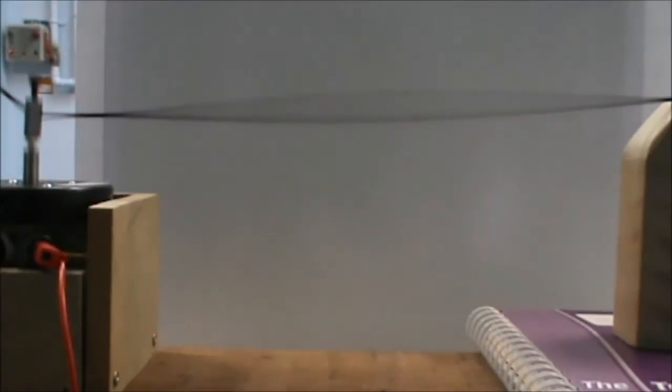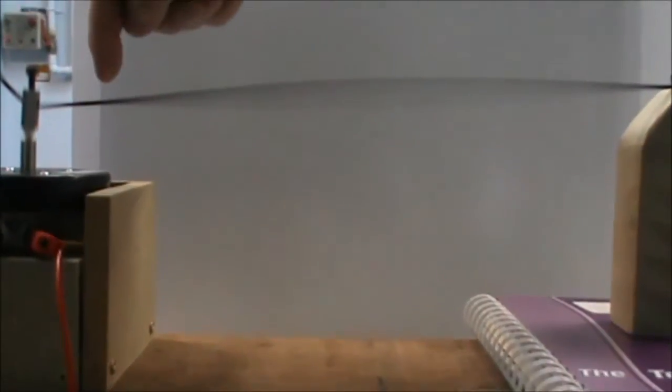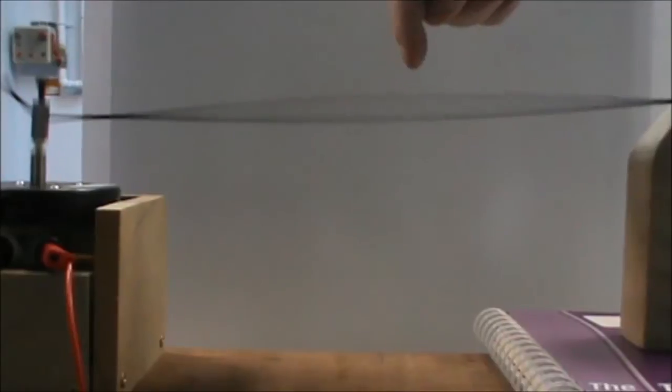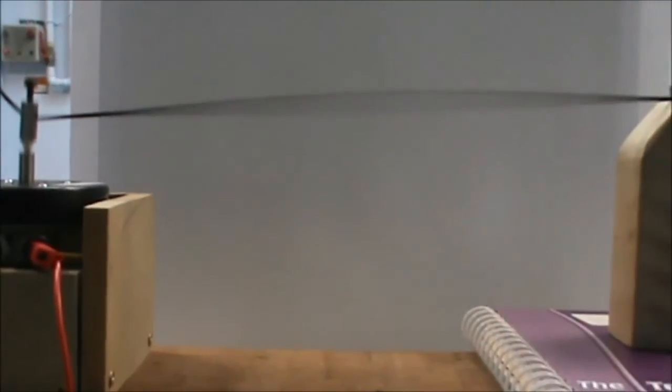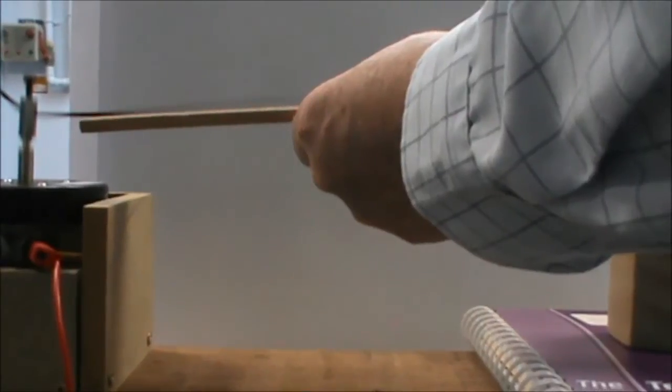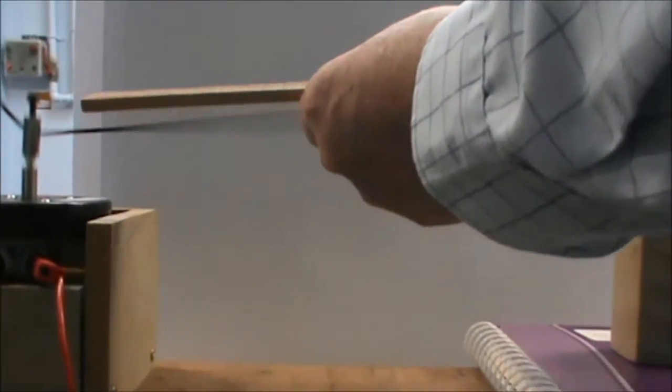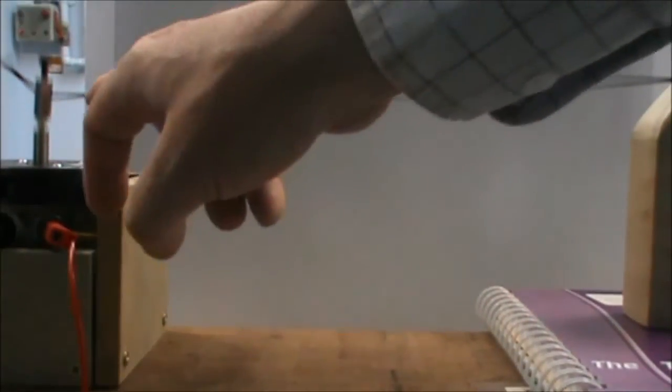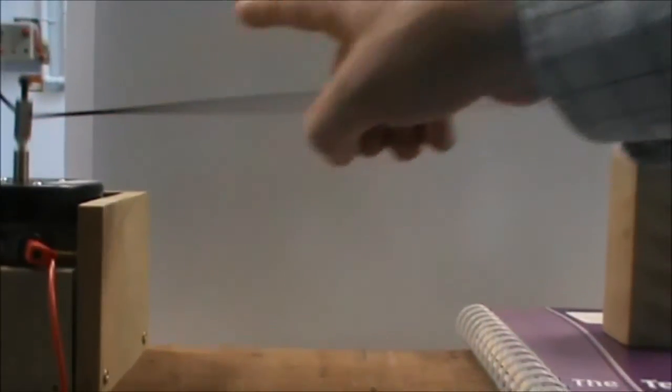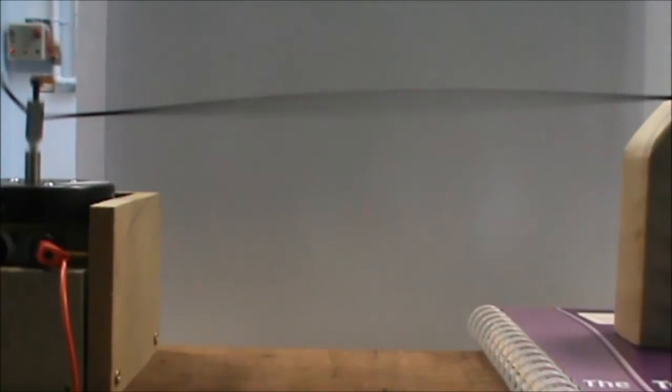Using our meter rule, we can measure the length of our wave. We start at the node here, we go through the anti-node to the node here. So measuring that, we have a wave distance from here to here of 0.31 meters. Now this is only half a wavelength, so our total wavelength is 0.62 meters.